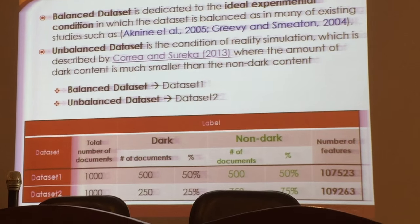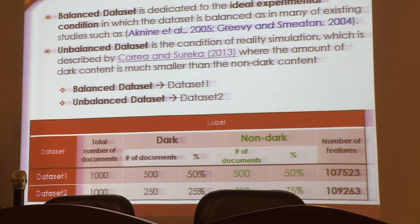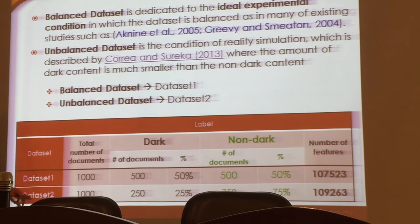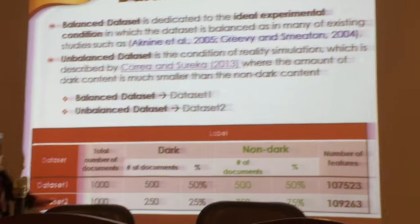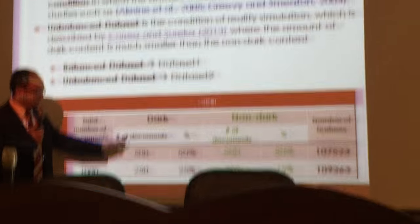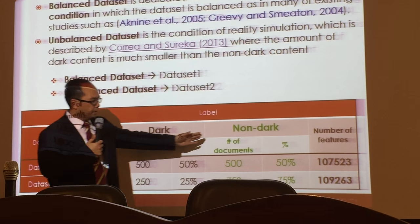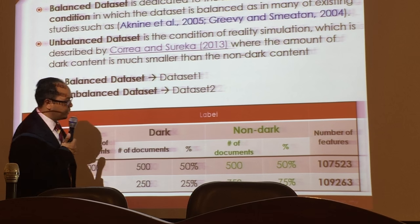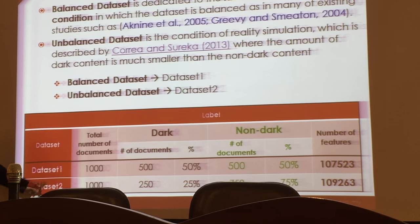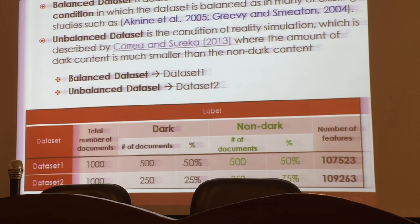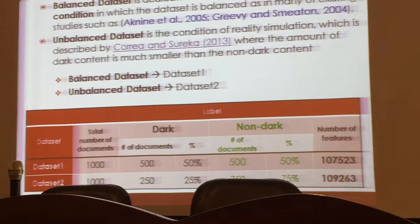These are the balanced dataset and the so-called embedded dataset, showing how the distribution of the data components looks — 50% dark website and this many non-dark websites. This is used for labelling in the training of the support vector machine.